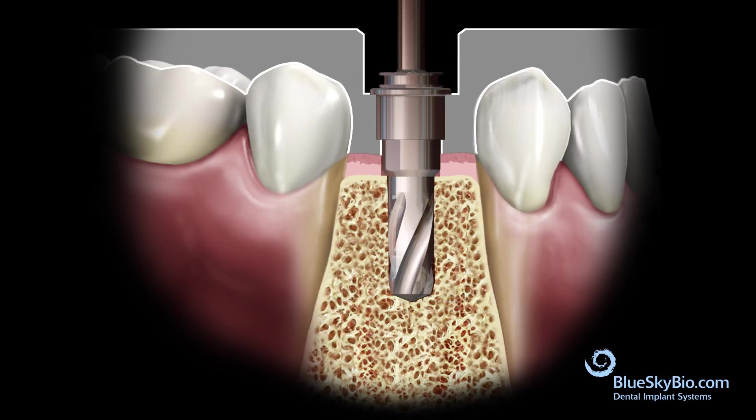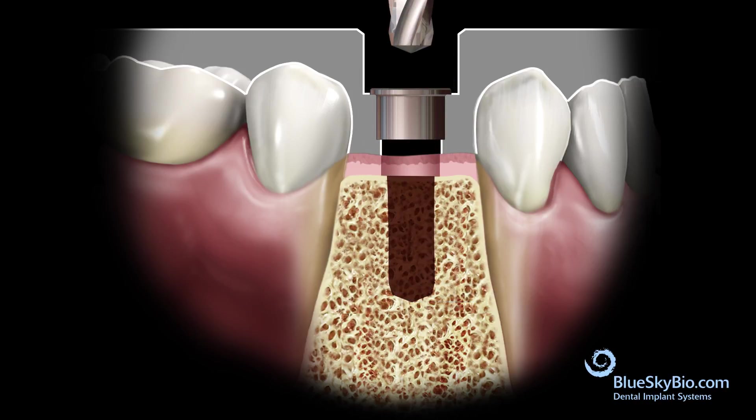If you determine that the bone is soft, you can skip the next drill diameter and insert the implant at this point. The self-tapping and tapered design of the Bio Max implant will compress the soft bone and obtain proper primary stability.